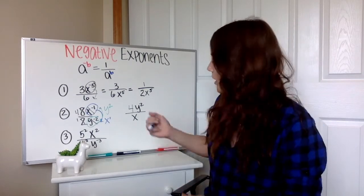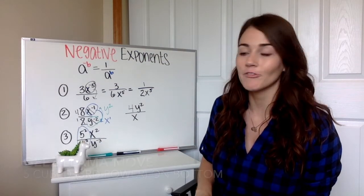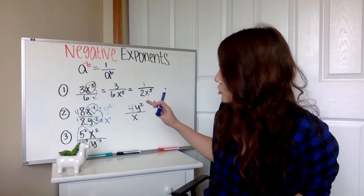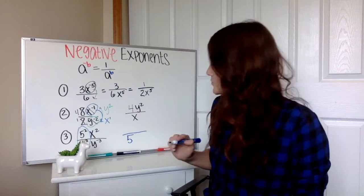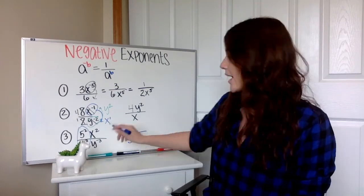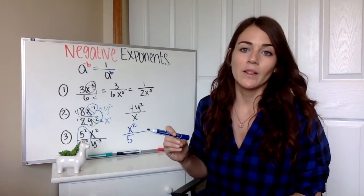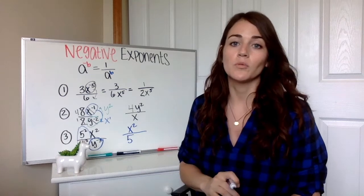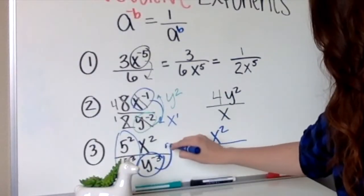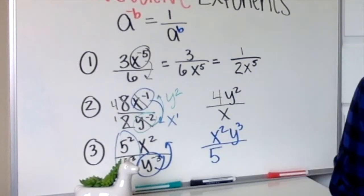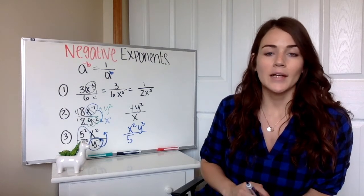Number 3 is a little more challenging. We can use our quotient rule because they have the same base of 5. Subtracting 3 minus 2, I'd be left with one 5, and since there are more 5s on bottom, I have 5 to the first on bottom — or just 5. My x squared is positive with nothing to combine with, so I leave it on top. And then y to the negative 3 — we don't want a negative exponent in our answer, so we move it to the bottom to get y to the positive 3. Our simplified answer is x squared y cubed over 5.